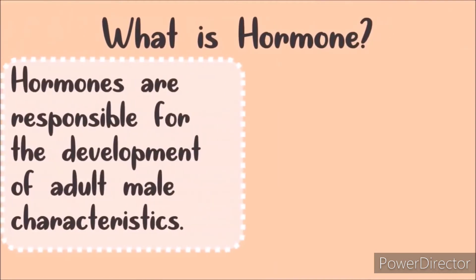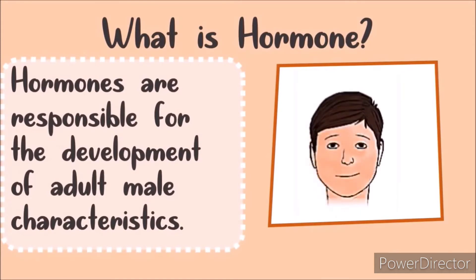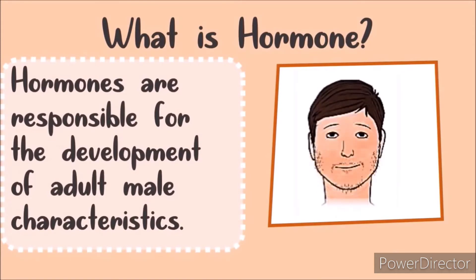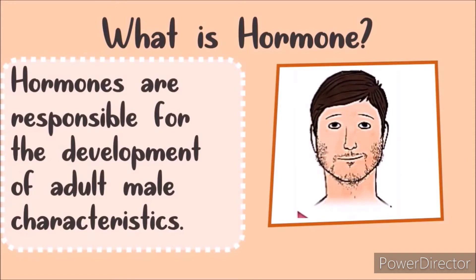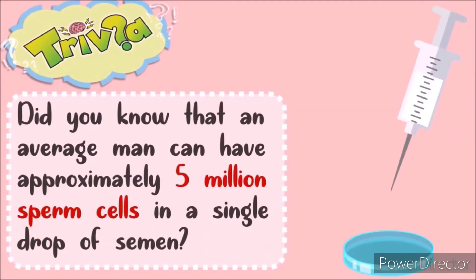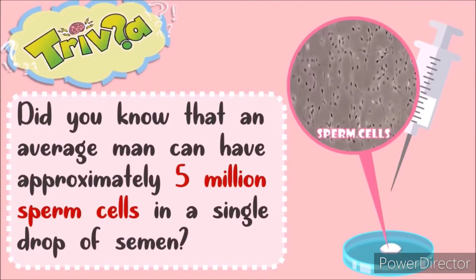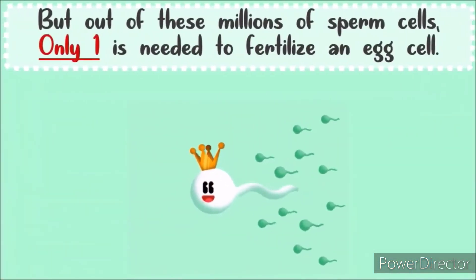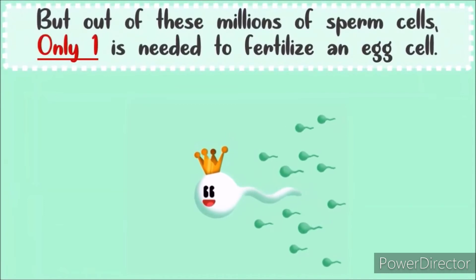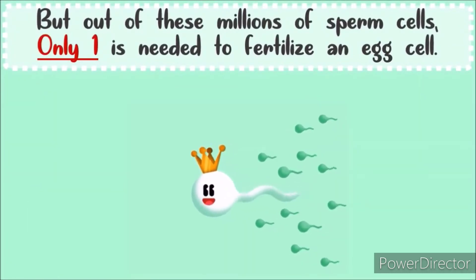Hormones are responsible for the development of adult male characteristics. A male can produce numerous sperm cells. Did you know that an average man can have approximately 5 million sperm cells in a single drop? But out of these millions of sperm cells, only one is needed to fertilize an egg cell.